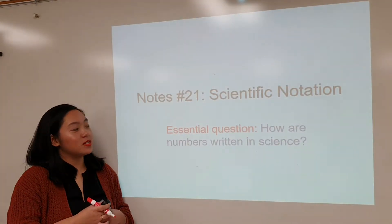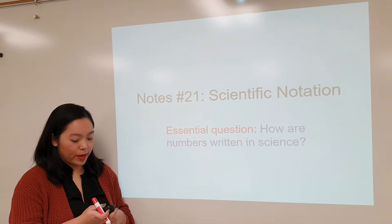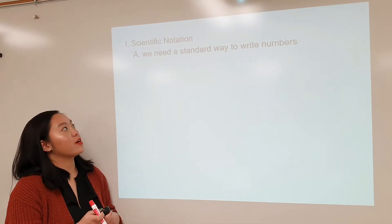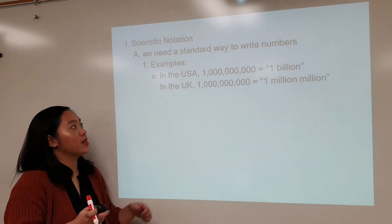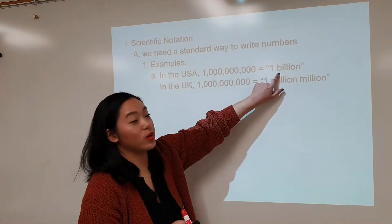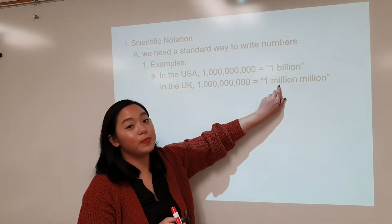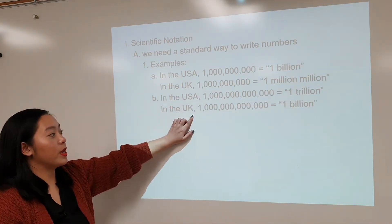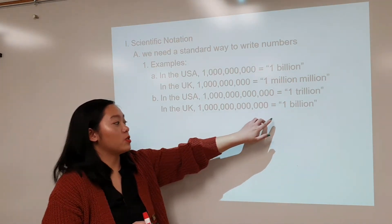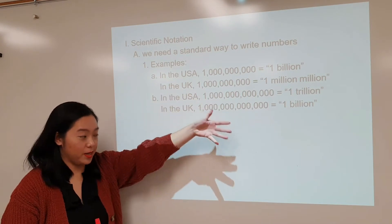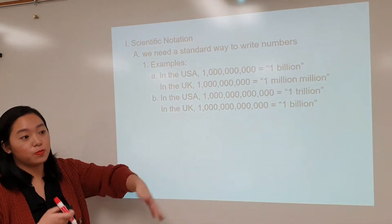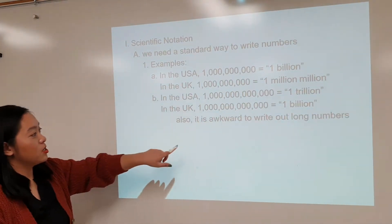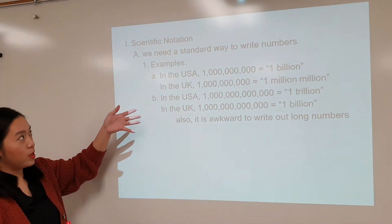Welcome back everyone. Let's talk about scientific notation. How do we write numbers in science? There's a different way we do that as opposed to our regular numbers in everyday lives. We need a standard way to write these numbers because in America we write 1 billion, but in the UK the same number is called 1 million million. Similarly, what we call 1 trillion in America, the UK calls 1 billion. So in order for the scientific community to communicate effectively, we need a standard way. It's also very awkward to write really long numbers, so that's why we have scientific notation.